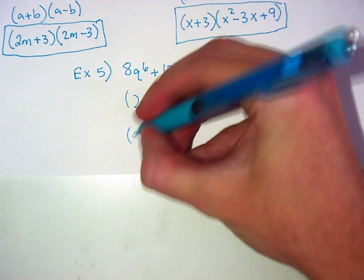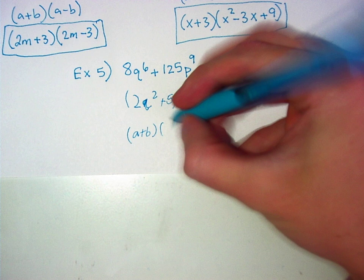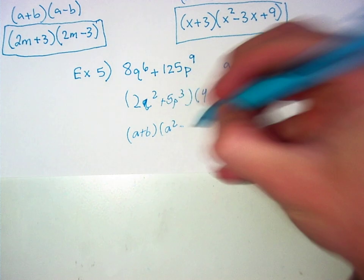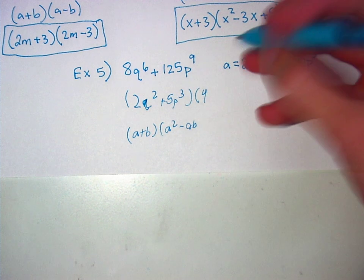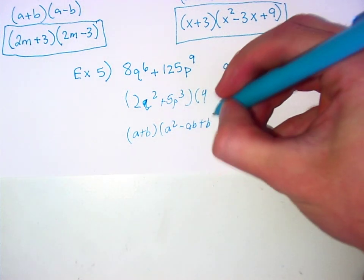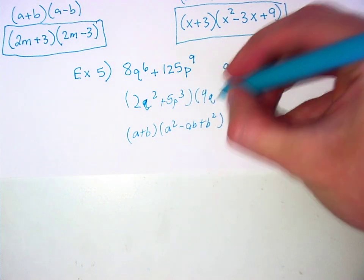Okay, A plus B, close, open A squared minus AB, sorry, plus B squared. All right, then we just plug in the A and Bs.